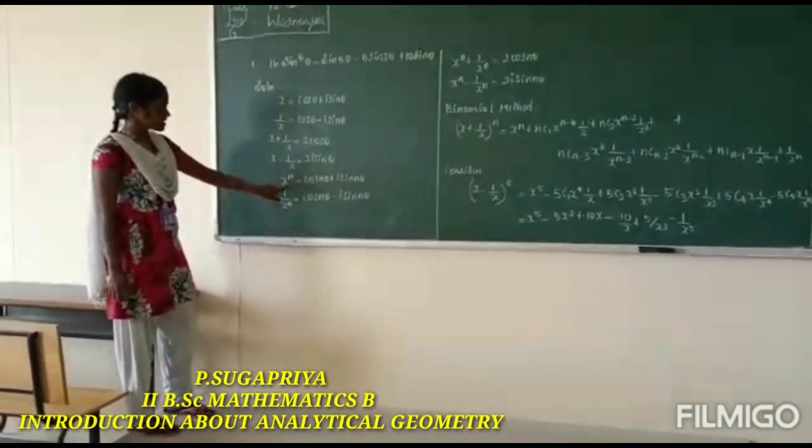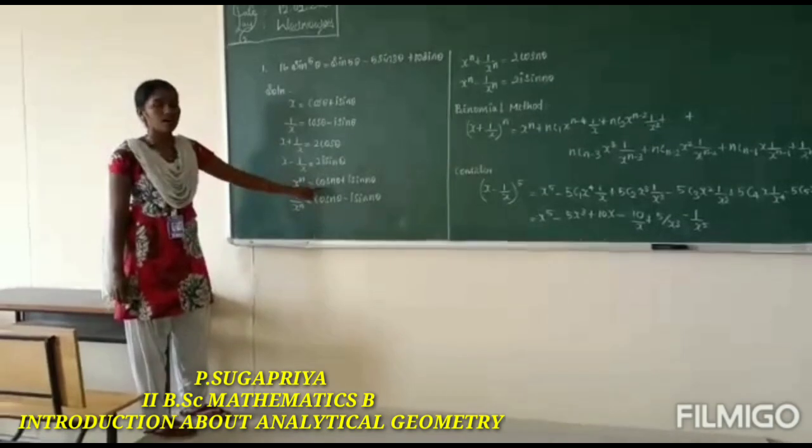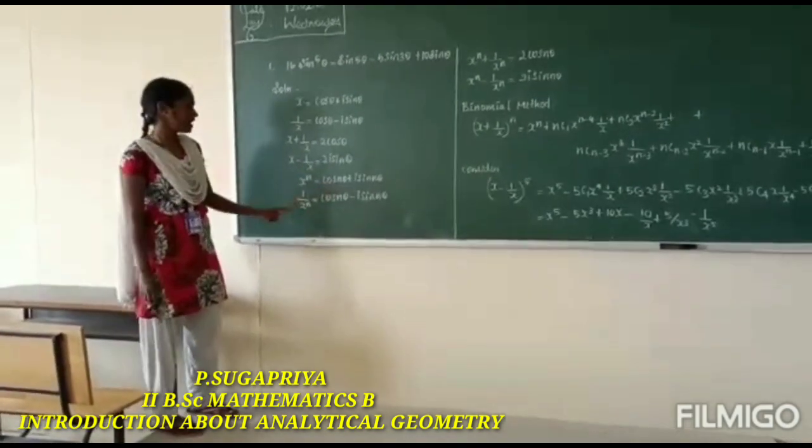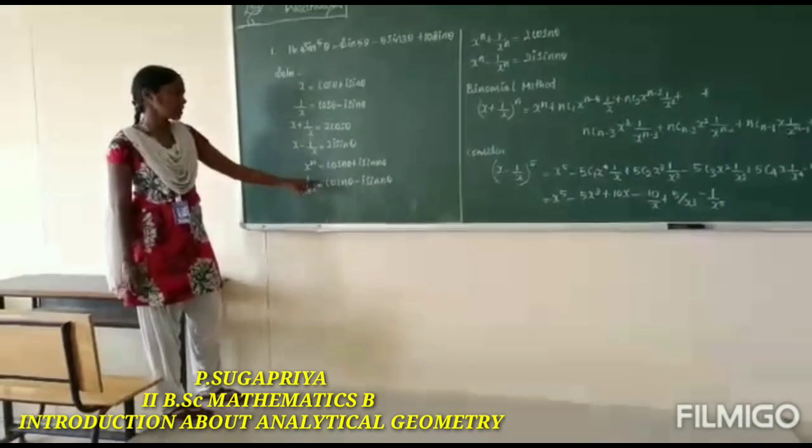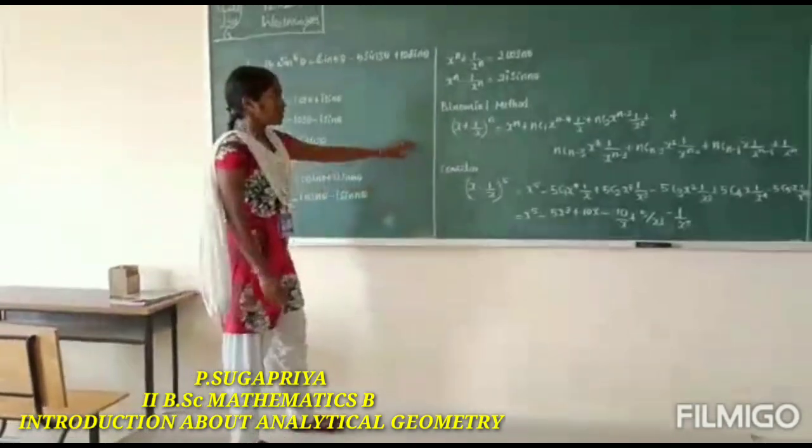We know that x^n equals cos n theta plus i sin n theta, and 1 by x^n equals cos n theta minus i sin n theta.